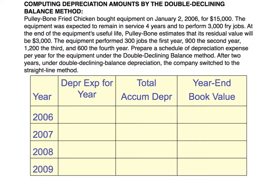Let's look at an example. Pulleybone Fried Chicken bought equipment on January 2nd for $15,000. The equipment was expected to remain in service for four years and to perform 3,000 fry jobs. At the end of its useful life, Pulleybone estimates the residual value will be $3,000. The equipment performed 300 jobs in year one, 900 in year two, 1,200 in year three, and 600 in year four. Prepare a depreciation schedule under the double declining balance method.